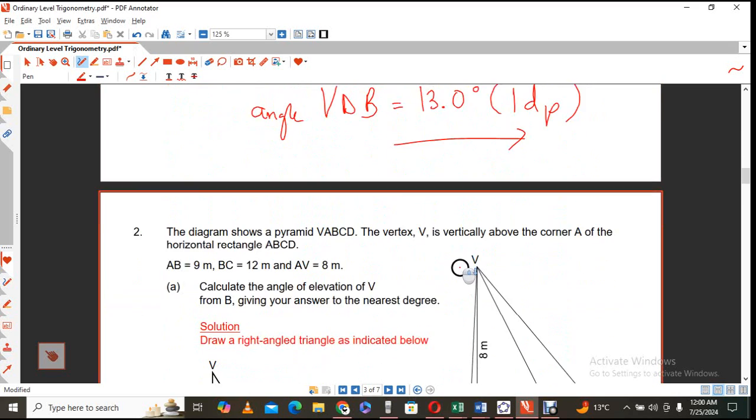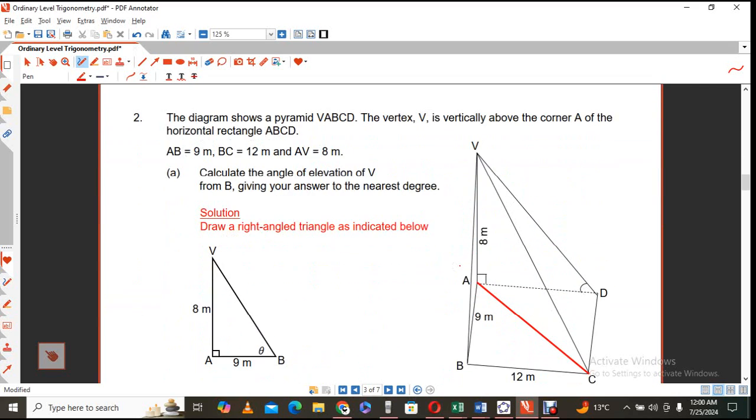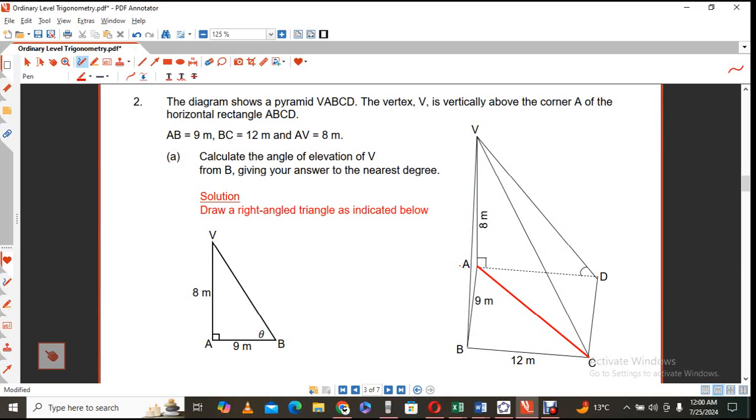Now let's go to the second question. Now it's a slightly similar question. It says the diagram shows a pyramid. And the pyramid is indicated by V, A, B, C, D. As you can see. The vertex V is vertical above corner A. Of the horizontal rectangle A, B, C, D.